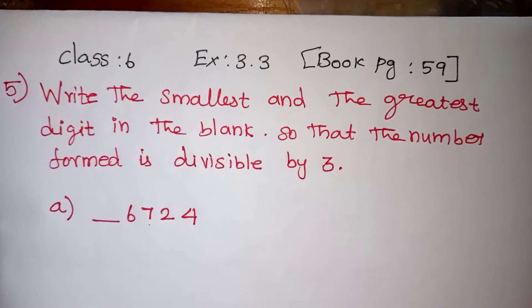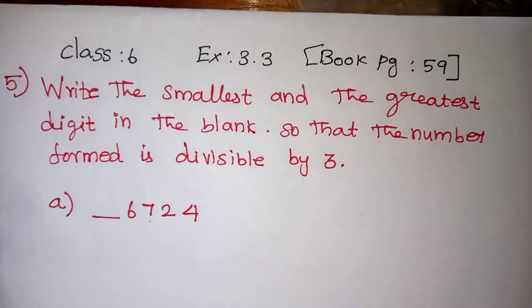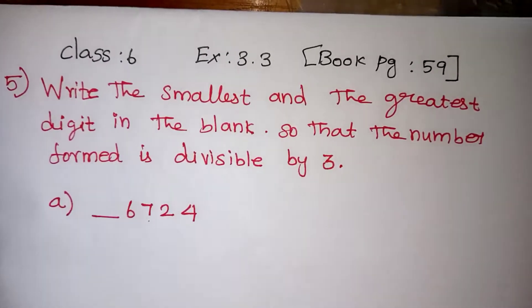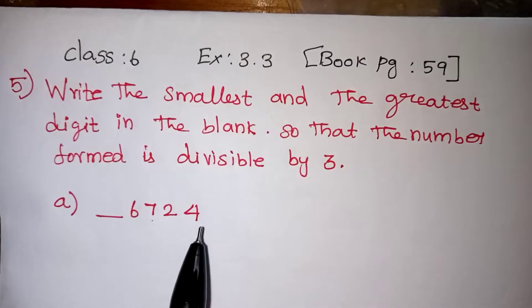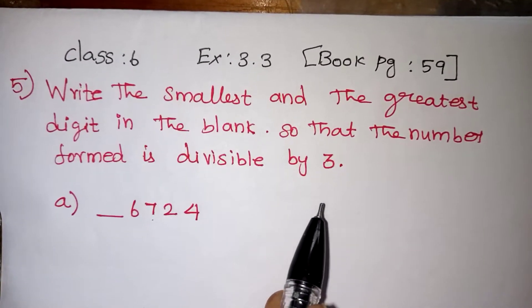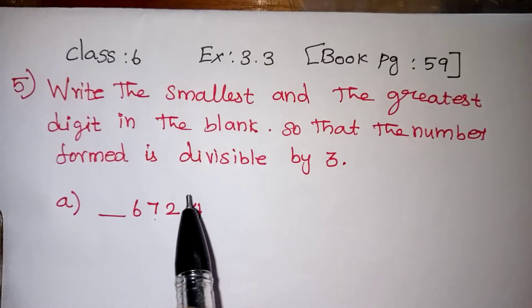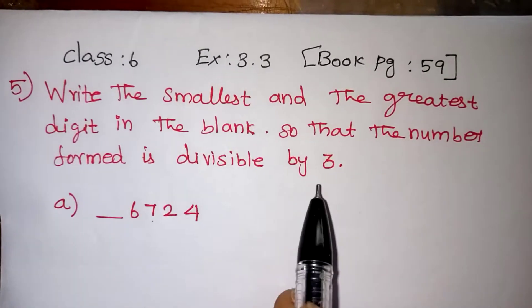Hi students, in this video we are going to learn exercise number 3.3, question number 5. Write down the smallest and greatest digit in the blank so that the number formed is divisible by 9.